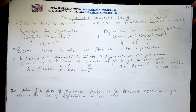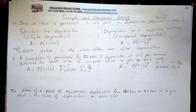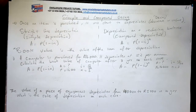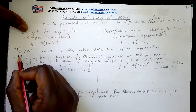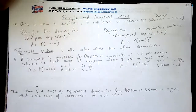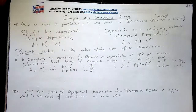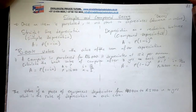Once an object depreciates and you sell it, the value of it after depreciation is called book value. Book value is the value of an item after depreciation. Now let's look at an example: a computer is purchased for 16,000 and depreciates at 15 percent per annum.